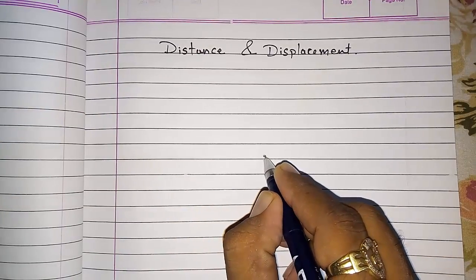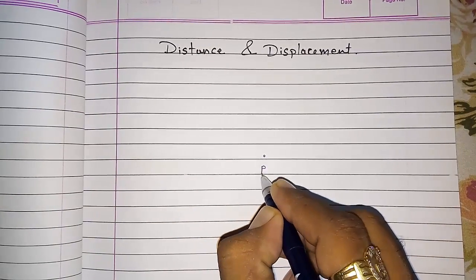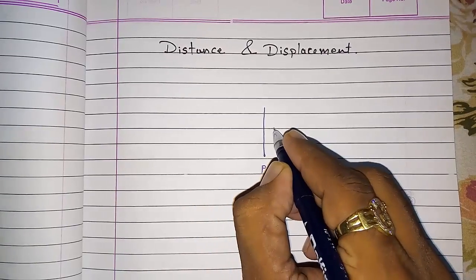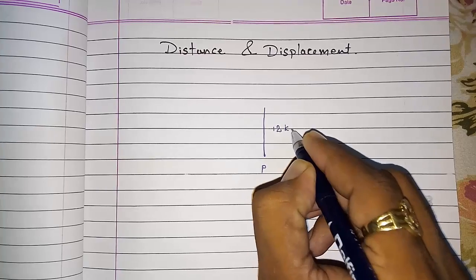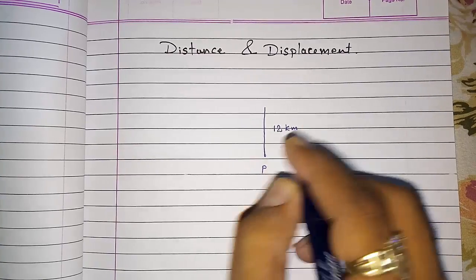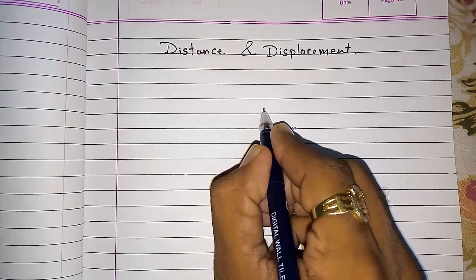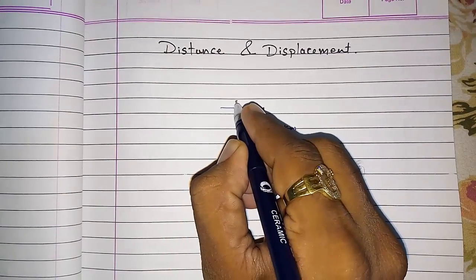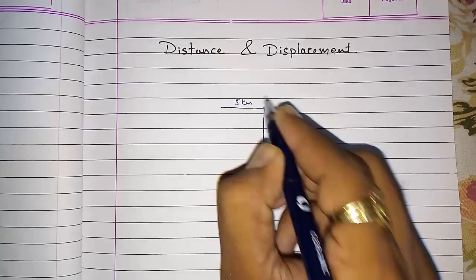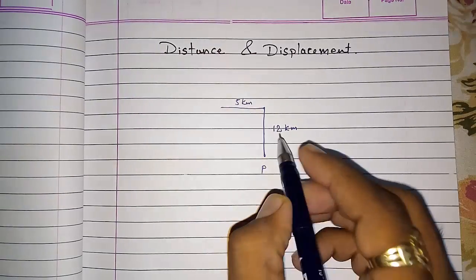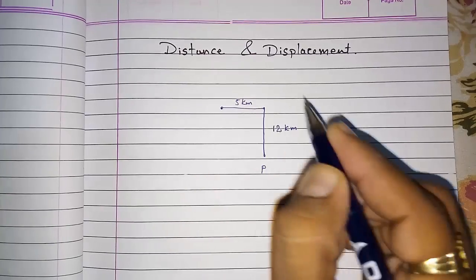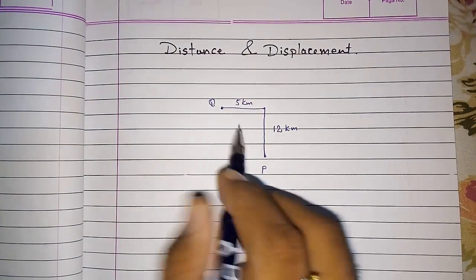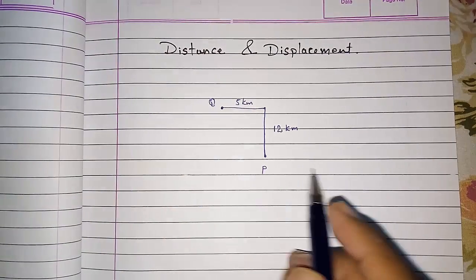Look here. From point P, Ram is moving towards another point which is 12 kilometers far away. From that point, Ram is moving to another point that is 5 kilometers away towards west, reaching point Q. He had started from point P and now he has reached at point Q.